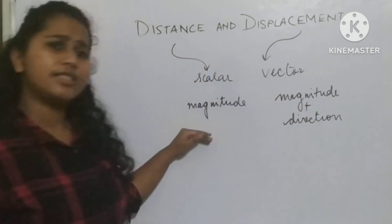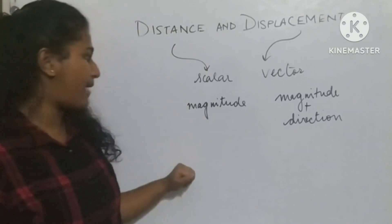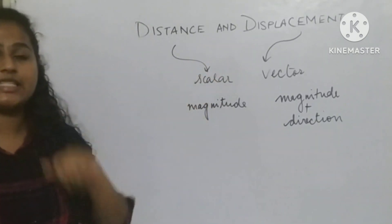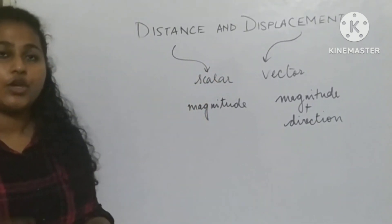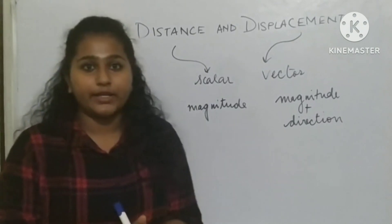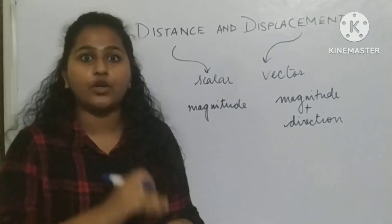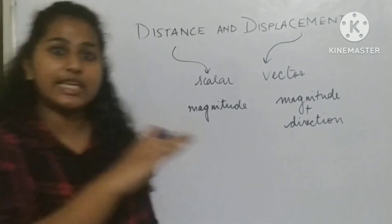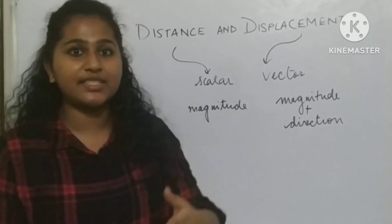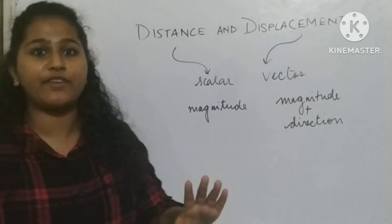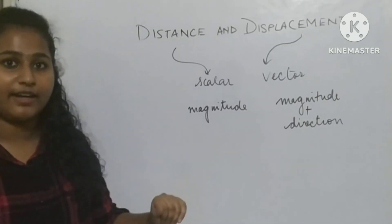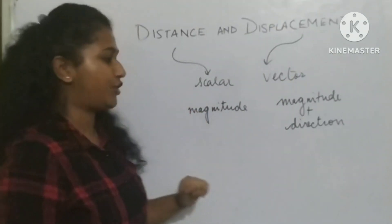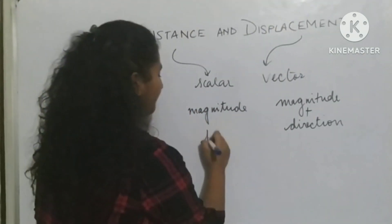The best example for a scalar quantity is time. What's the time right now? 8 o'clock. We don't say '8 o'clock towards east' or 'towards west' — so time has no direction.